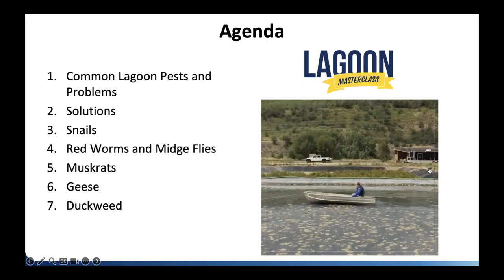Today we're going to talk about common lagoon pests, problems, and their solutions. We did a poll to our Facebook group to see what lagoon pests people wanted covered before we created this presentation. The group came up with snails, red worms, midge flies, muskrats, geese, and duckweed. For those who aren't part of our Facebook group — it's called 'Lagoons Do It Better' — there are over 700 operators in that group where people put questions up and operators help operators.